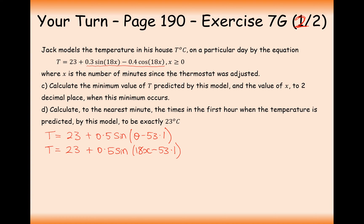x is the number of minutes since the thermostat was adjusted. Calculate the minimum value of t predicted by this model and the value of x to two decimal places when this minimum occurs. The minimum occurs when the sine function is minus 1. Therefore, the min value of t is 23 minus 0.5, so 22.5 degrees.